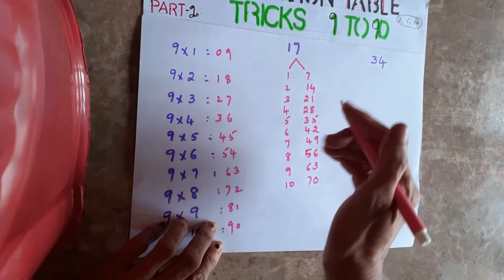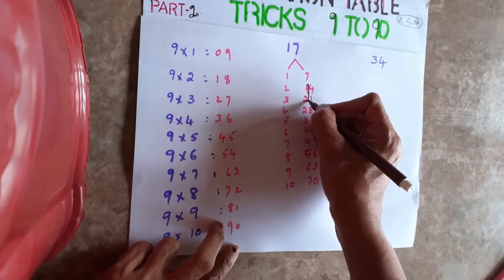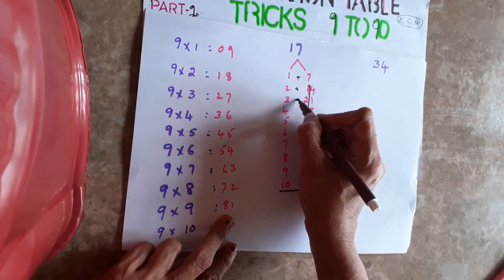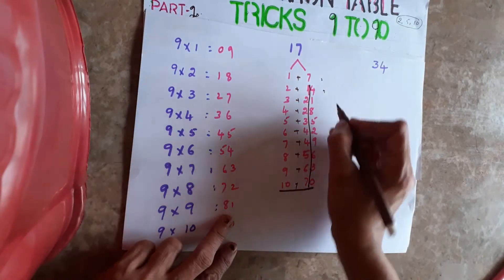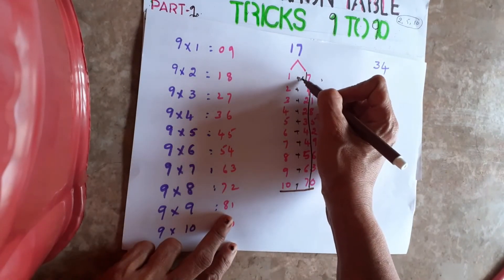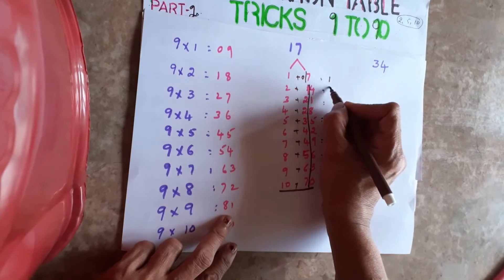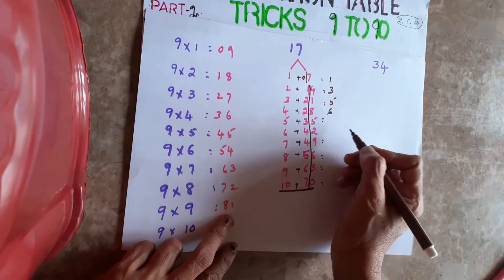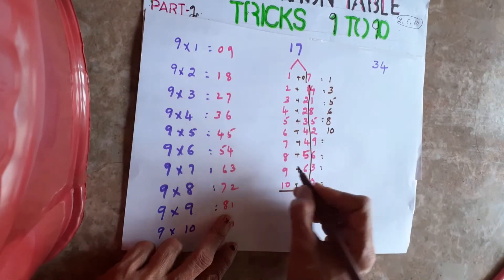After writing the 7-table, look at the 10th-table column. Whatever is in the tens place, you add that number to the 1-table column. If nothing is there, it means 0. So: 1+0=1, 1+2=3, 3+2=5, 4+2=6, 5+3=8, 6+4=10, 7+4=11.